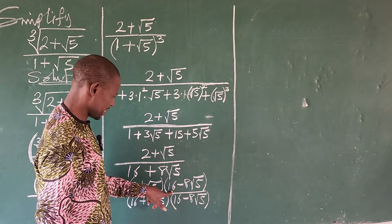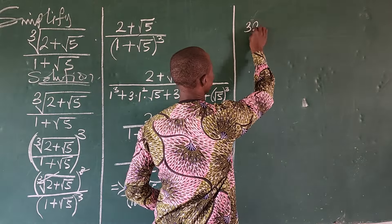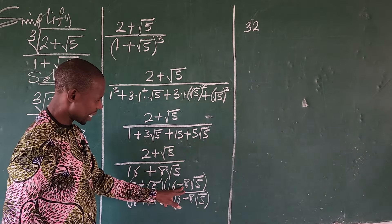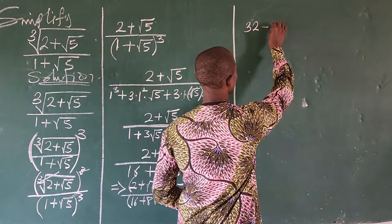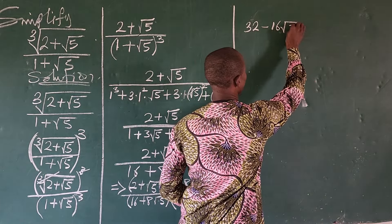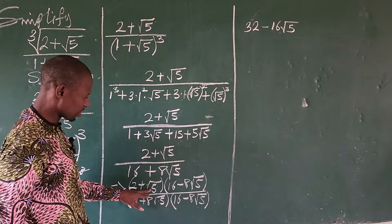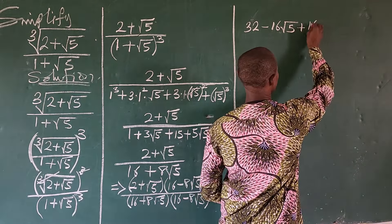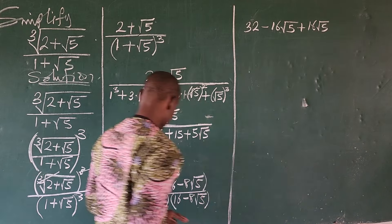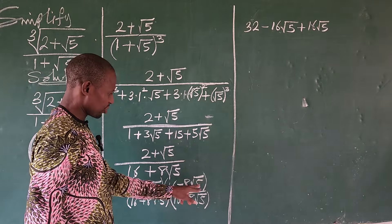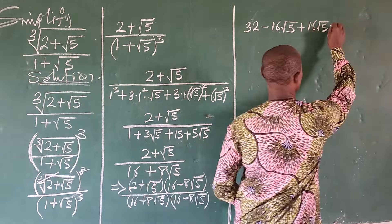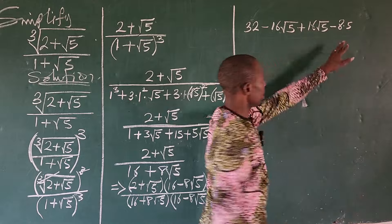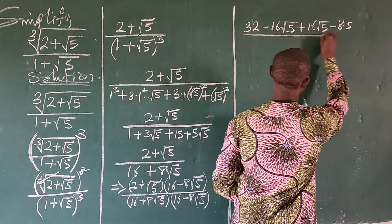From here, we expand the numerator. 2 times 16 gives us 32. Then 2 times minus 8 root 5 gives us minus 16 root 5. Then root 5 times 16 gives us plus 16 root 5. Then root 5 times minus 8 root 5 gives us minus 8 times 5, which is minus 40. This is all over the denominator.